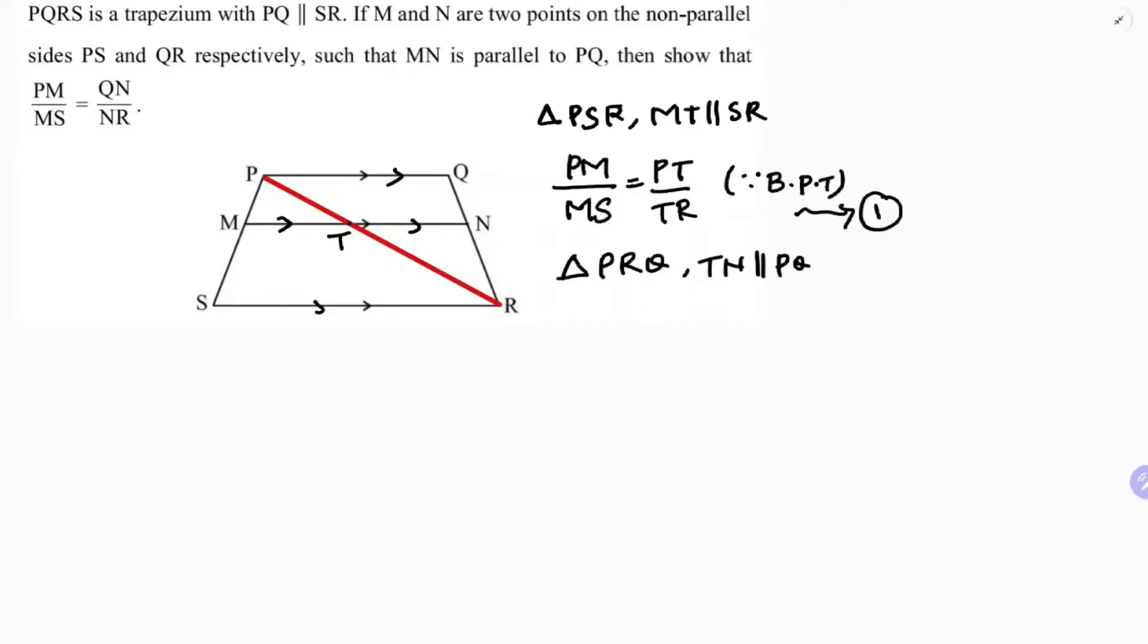I'll not start from R, I'll start from PT only, it will be easy. PT/TR. So however you are taking on the left side, the same thing you should take here: PT/TR. You started from P, so on the right side start from Q: QN/NR.